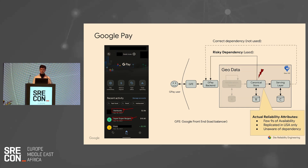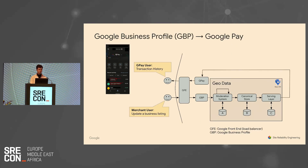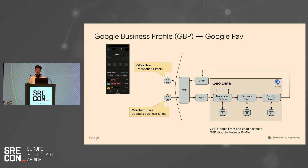When we found this risky dependency, we were able to notify the owners of GPay and fix it within a month. So we were able to find and fix GPay's risky dependency on the canonical store. Now let's take a step back and understand how this data gets from the merchant to GPay. At the very beginning, a merchant will give us some data via a Google Business Profile application or the merchant API. This data — like the name or office hours — gets queued up for moderation, waits a certain amount of time, passes moderation, and then gets stored and curated inside of the canonical store.